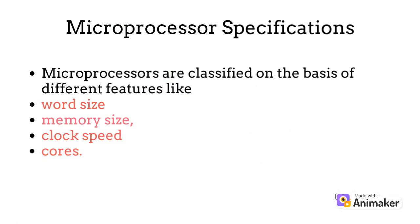We will now talk about the microprocessor specifications. Microprocessors are classified on the basis of different features like word size, memory size, clock speed, and cores. Let us now look into each of these features in detail.